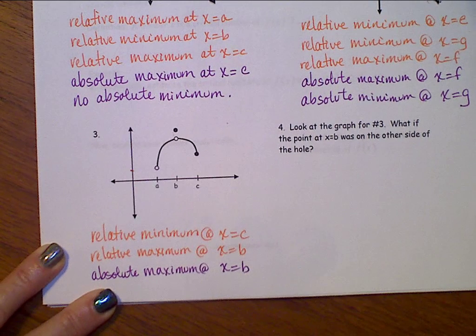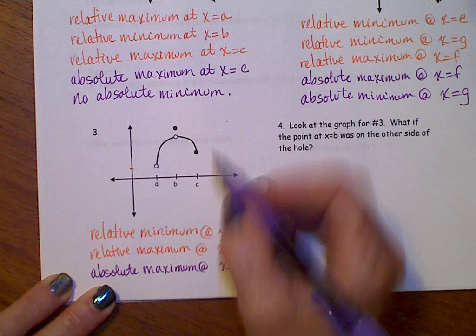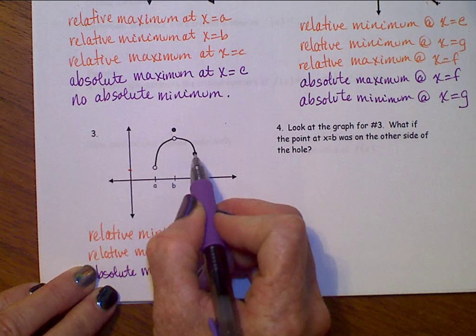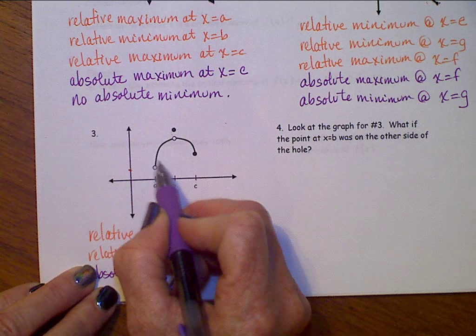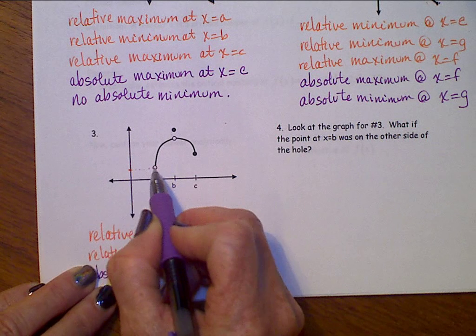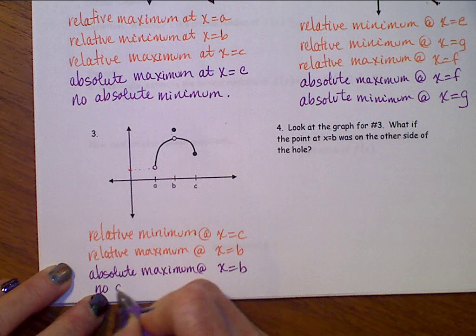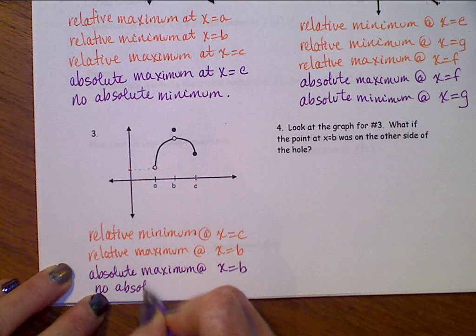How about an absolute minimum? There isn't one because the y-value here at c is larger than the y-values over in this area, and we can never actually get down to that y-value right here. So there is no absolute minimum.